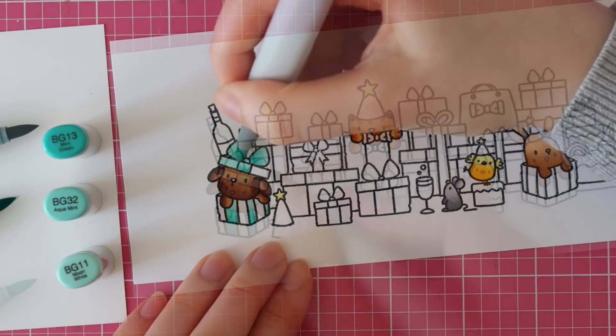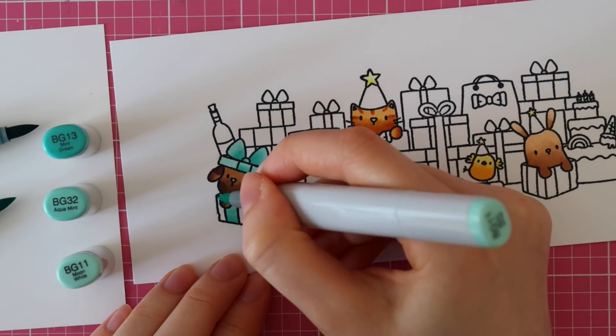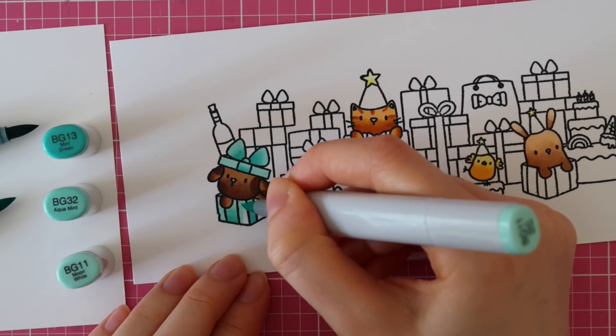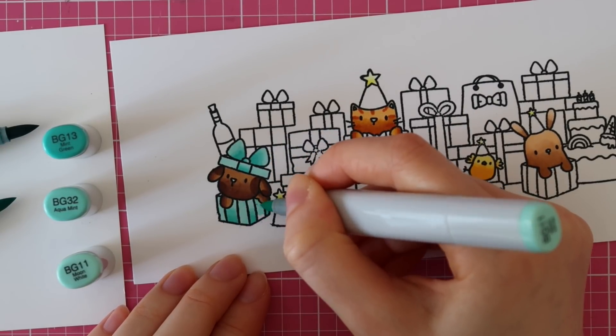Then I am using the lightest color to color the other parts of those presents. And I'll be doing that for each color.